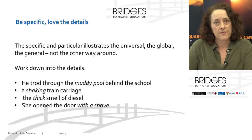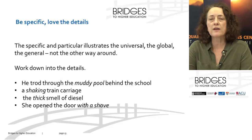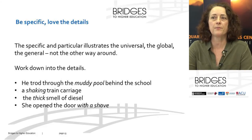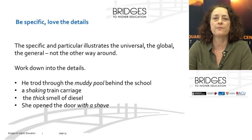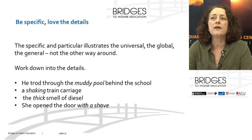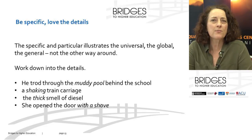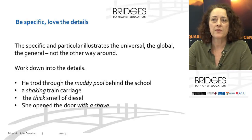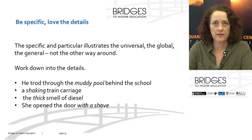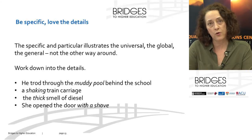Another really important element is to be specific. Sometimes we want to talk about really big feelings and big ideas — to reach for the universal. But the universal is best expressed through things that are specific; you work down into the details. It's not just 'behind the school' — your character is walking through a muddy pool behind the school. You've got a shaking train carriage. What is the smell of diesel? It's a thick smell. Somebody opens a door — how? They're angry, in a hurry, they do it with a shove. That shove might convey the anger you want the reader to sense without you necessarily having to name that feeling.